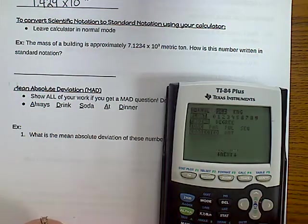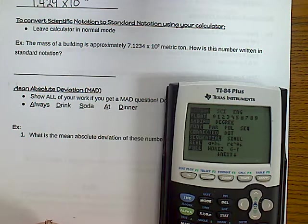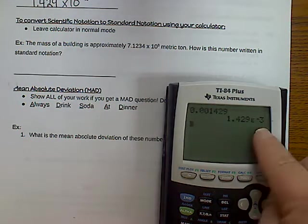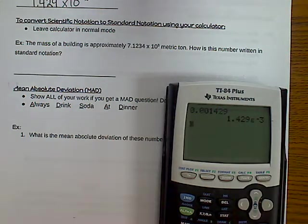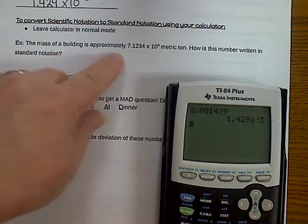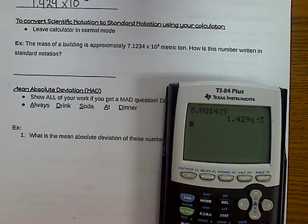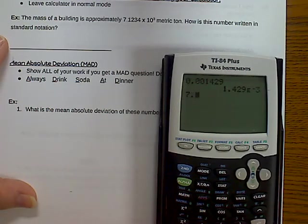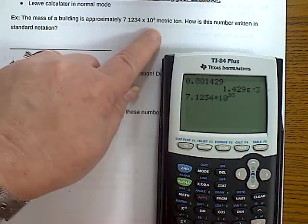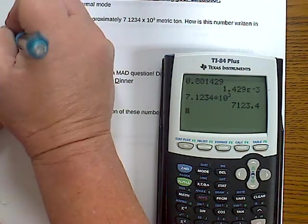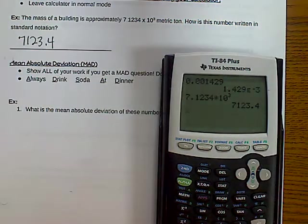To convert scientific notation to standard notation, we gotta go back and change our mode. We gotta make sure we're on normal. Second and quit. And if you try and do something when you're in scientific, you're always gonna get this kind of thing. So you'll know, get back there, change your calculator mode to standard or normal. The mass of a building is approximately 7.1234 times 10 to the third metric ton. How is this number written in standard notation? So we're just gonna go in and write 7.1234 times 10 to the power of three. Hit enter. And there is our answer: 7123.4. Easy enough.